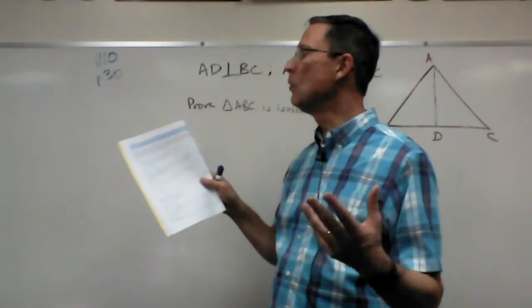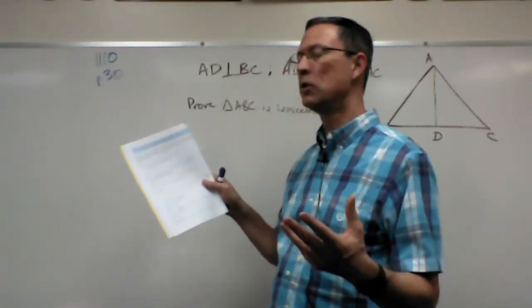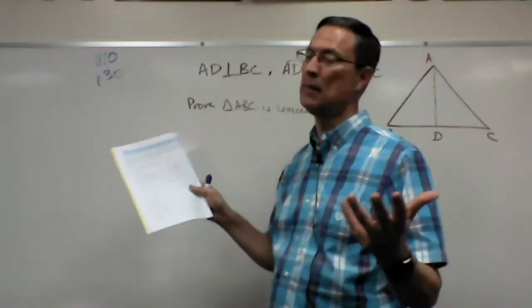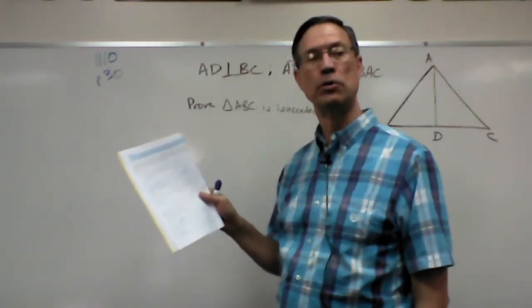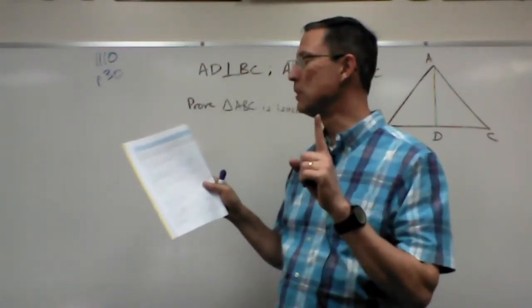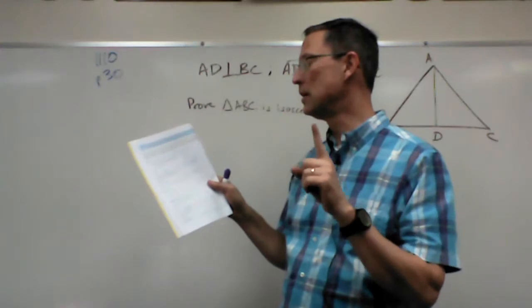So one leg and one angle, and then prove that they're congruent to a leg and an angle of another triangle. And you have proven that those two triangles are congruent. We have to first make sure that we prove that they are right triangles.